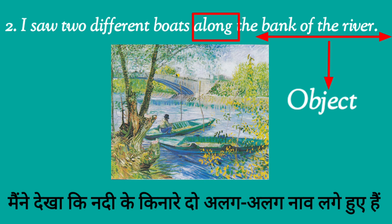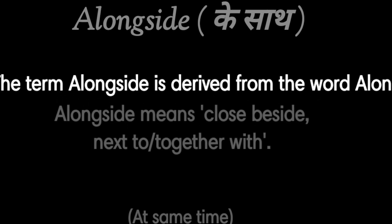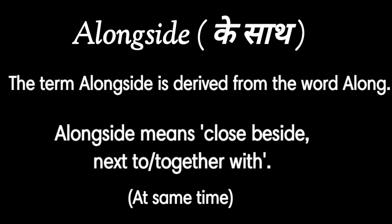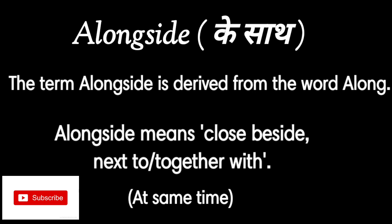I hope you are clear with Along. Now, Alongside — संबंध सूचक अव्यय, के साथ, के साथ-साथ, के बगल। The term Alongside is derived from the word Along — it is an integral part of Along. Alongside means: close beside, next to, just बगल में, together with, एक साथ, at the same time. There is a minor difference between Alongside and Along about which you need to be careful.